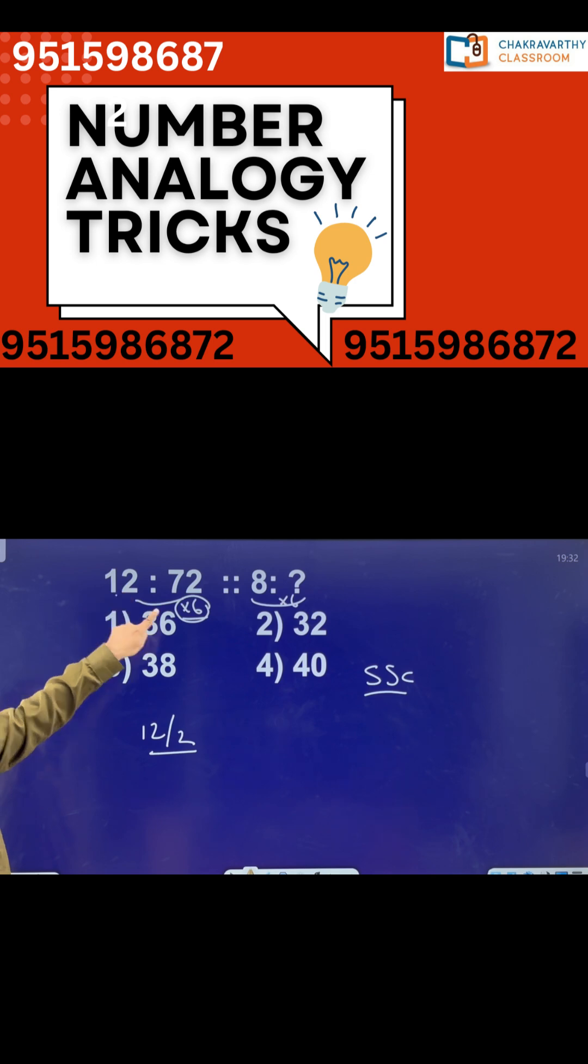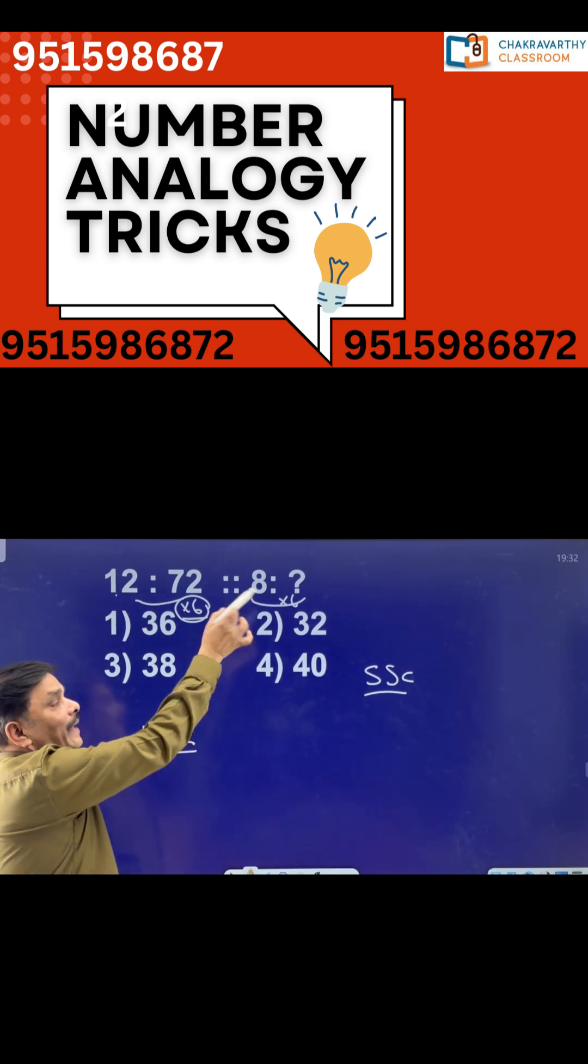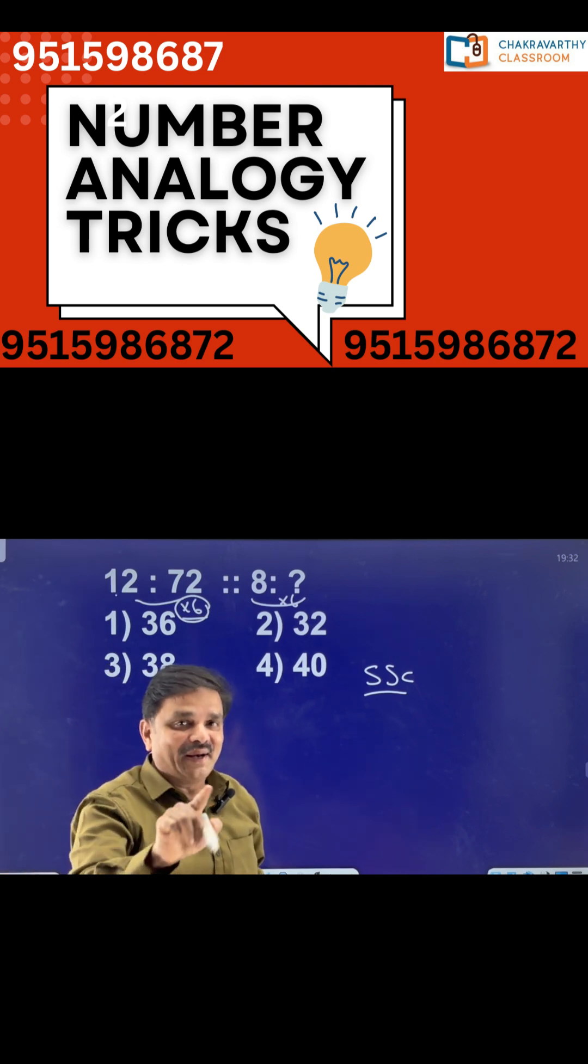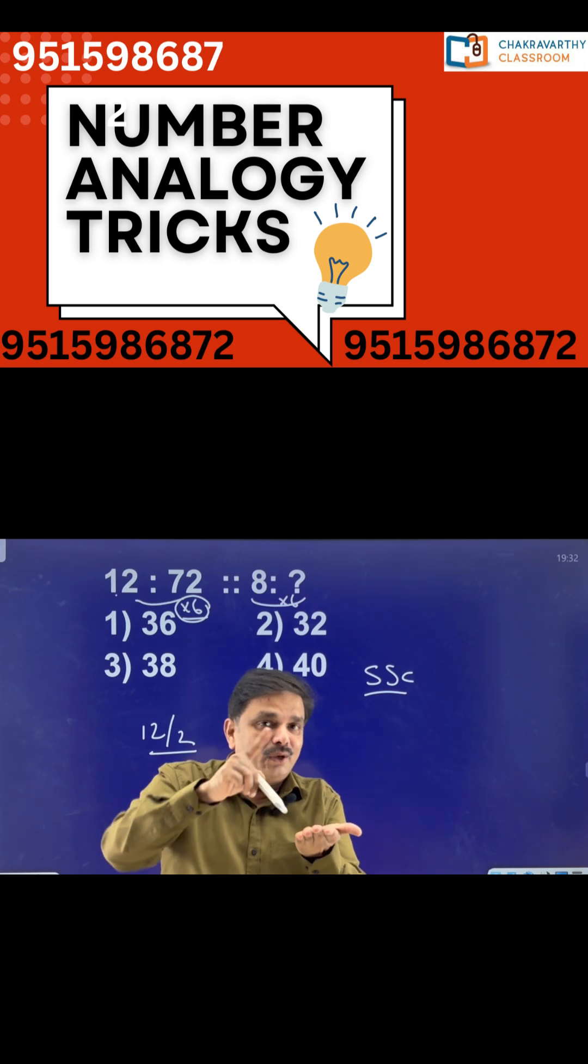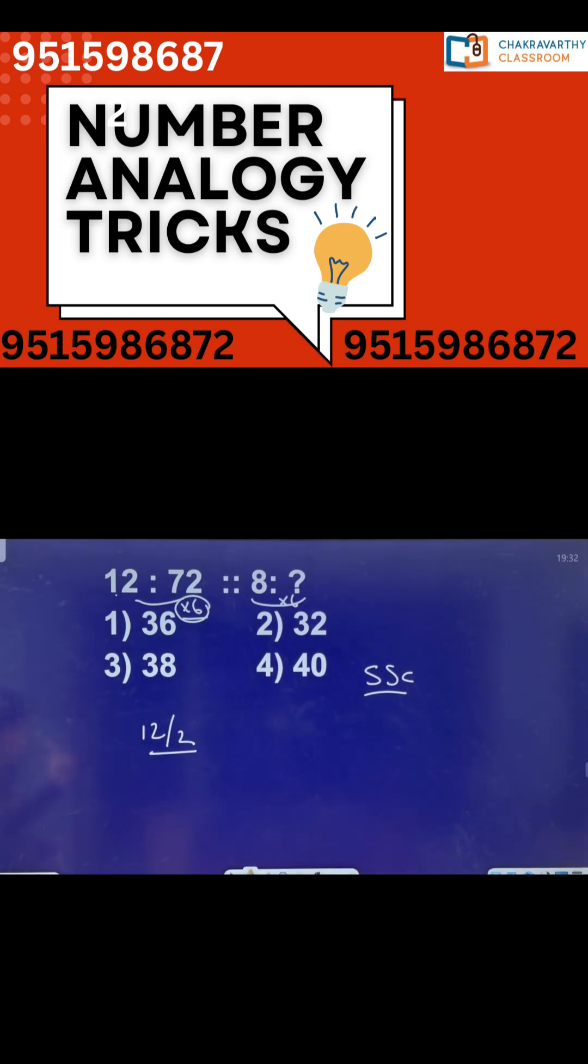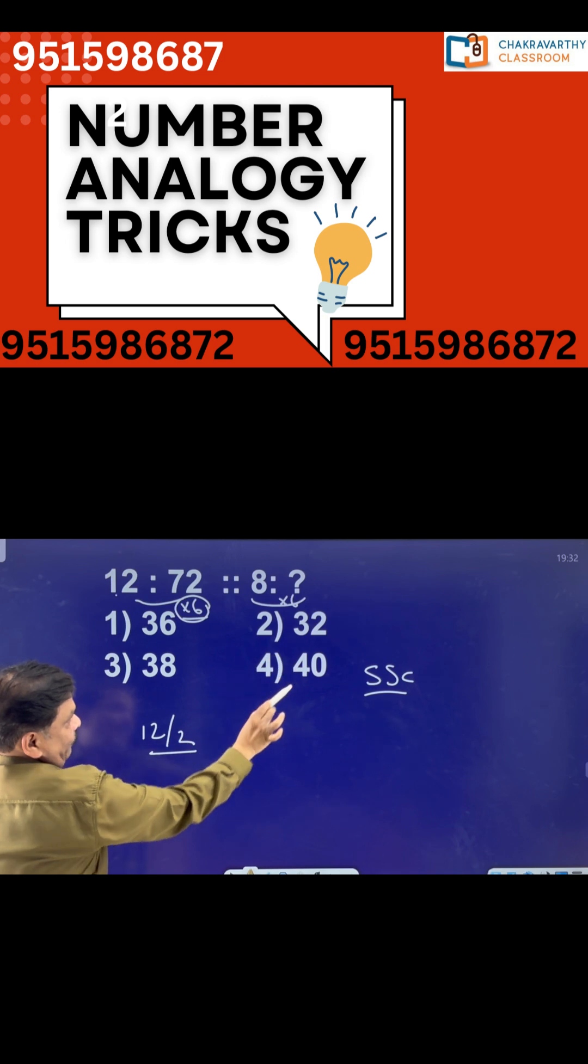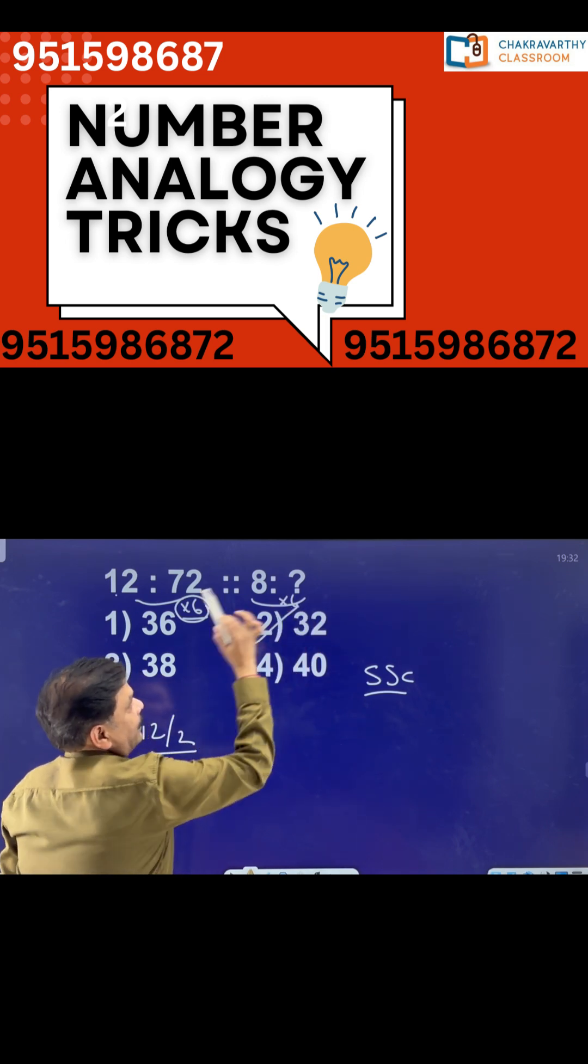Now 12 into 12 divided by 2, I got 72. Similarly try for this one: 8 into 8 divided by 2. 8 divided by 2 is 4, so 8 into 4, 8 into 4 is 32. Yes, I got 32 as one of the options here. So this is 32.